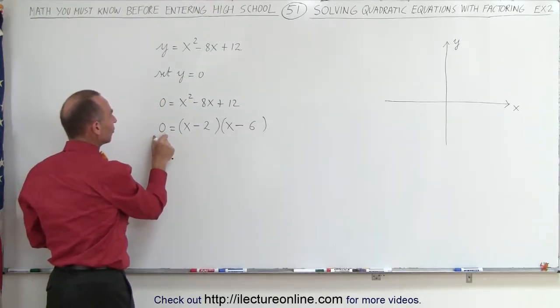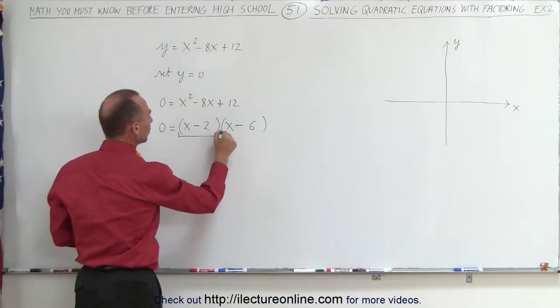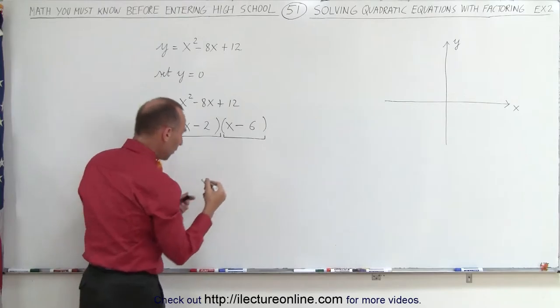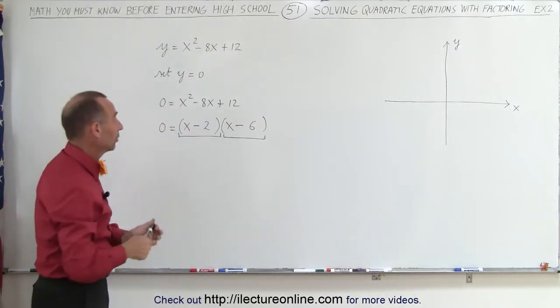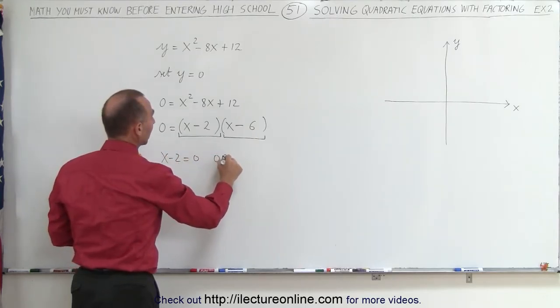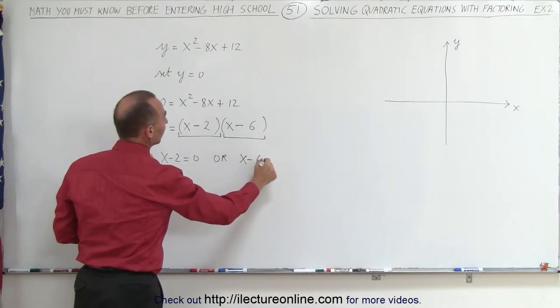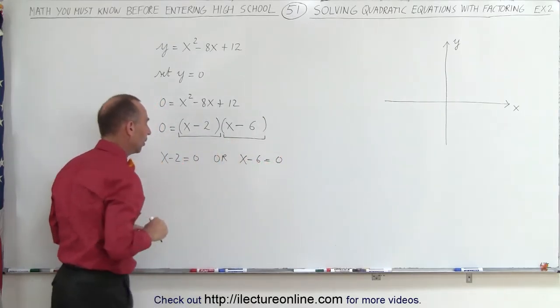Now we can say that 0 equals this times this, the product of these two binomials. For a product to equal 0, one or the other must equal 0. That means x - 2 = 0 or x - 6 = 0. Either one of these will allow the product to equal 0.